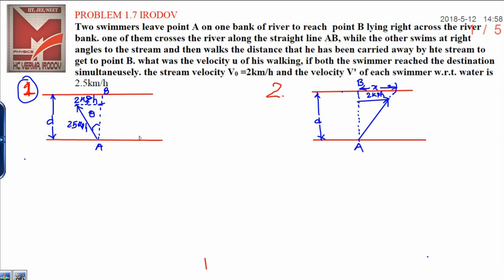He has been carried away by the stream to get to point B. What was the velocity u of his walking if both swimmers reach the destination simultaneously? The stream velocity Vstream = 2 km/h and the velocity of each swimmer with respect to water V = 2.5 km/h.